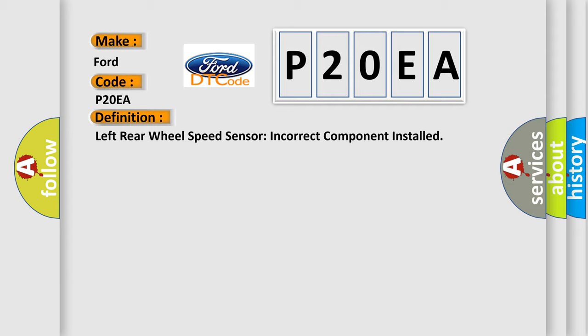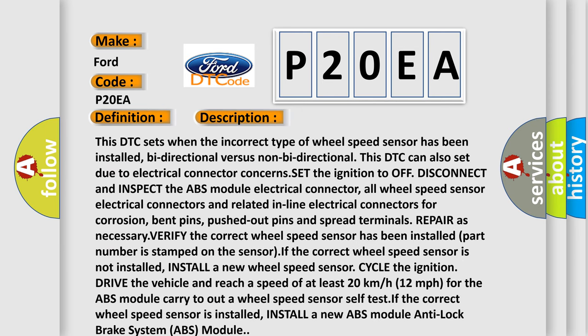This DTC sets when the incorrect type of wheel speed sensor has been installed — bi-directional versus non-bi-directional. This DTC can also set due to electrical connector concerns. Set the ignition to off, disconnect and inspect the ABS module electrical connector, all wheel speed sensor electrical connectors, and related inline electrical connectors for corrosion, bent pins, pushed out pins, and spread terminals — repair as necessary. Verify the correct wheel speed sensor has been installed; the part number is stamped on the sensor. If the correct wheel speed sensor is not installed, install a new wheel speed sensor, cycle the ignition, drive the vehicle and reach a speed of at least 20 kilometers per hour (12 miles per hour) for the ABS module to carry out its wheel speed sensor self-test. If the correct wheel speed sensor is installed, install a new ABS module.